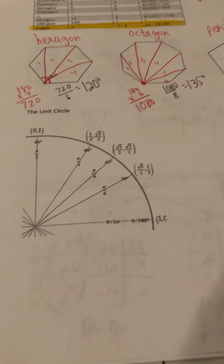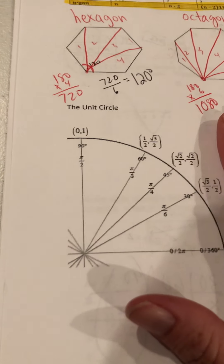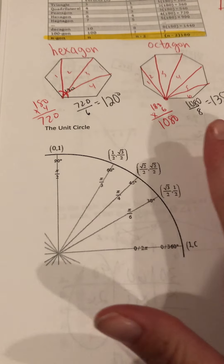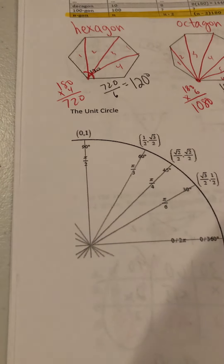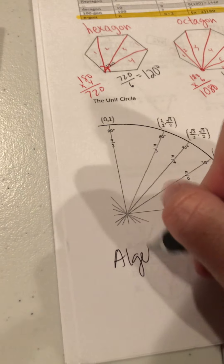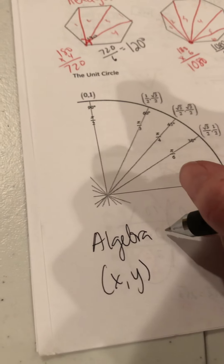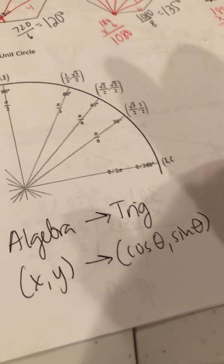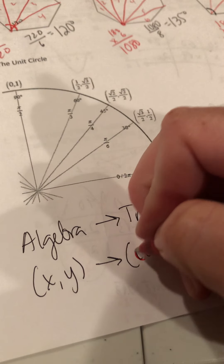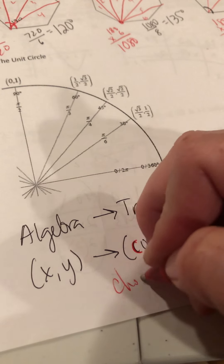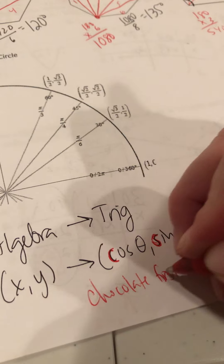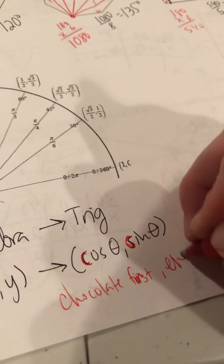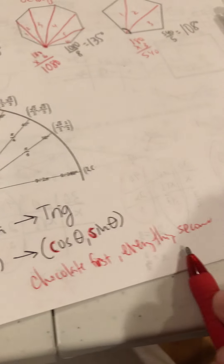We just learned about the 30-60-90 and 45-45-90 triangles, which are actually built into the unit circle. If you've never learned this, take a deep breath — you're not going to learn it all right now. In algebra we have ordered pairs (x, y); in trig we have ordered pairs (cosine, sine). A student teacher taught me a trick: 'chocolate is first' — C or S, chocolate first, everything else second.